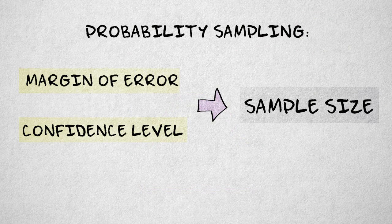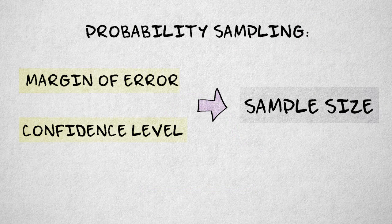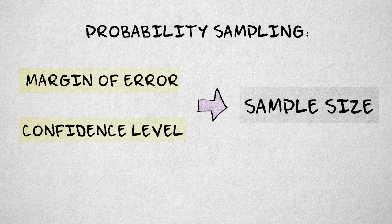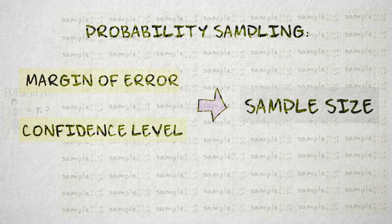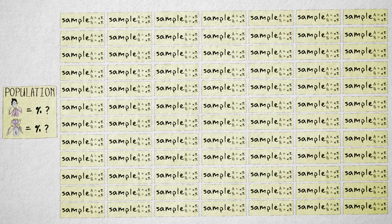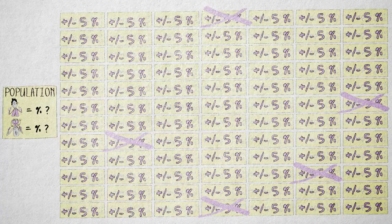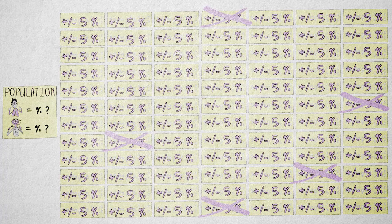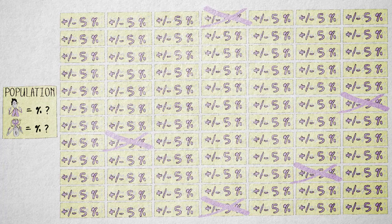If a probability sampling method is used, we can determine what margin of error we're willing to accept given a certain confidence level. We can say that we want our sample estimate of election results to differ by no more than 5% from the final results in 95% of the cases if we were to sample repeatedly.